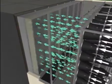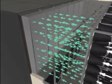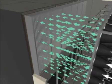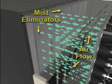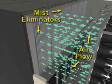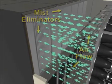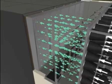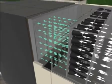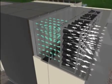Downstream of the evaporative cooling section are the mist eliminators. The mist eliminators capture loose droplets of moisture that may be carried out of the evaporative cooler media.